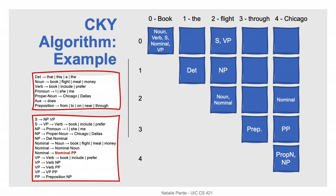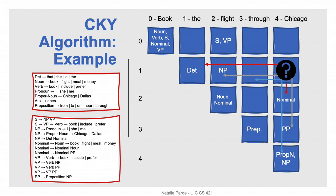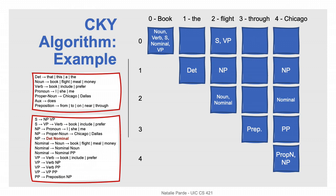We move on to four-word constituents. For 'book the flight through,' we look for a noun, verb, sentence, nominal, or verb phrase followed by nothing, or a sentence or verb phrase followed by a preposition. We don't find any matches, so 'book the flight through' isn't a valid constituent. For 'the flight through Chicago,' we look for a determiner followed by a nominal, or a noun phrase followed by a prepositional phrase. We find that a noun phrase is a match.